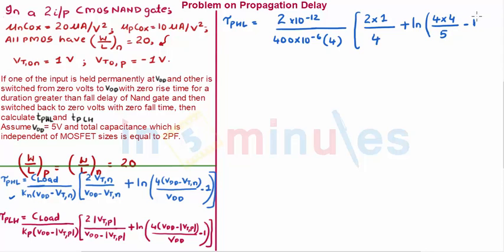V_DD minus V_TN is again, as I said, it's 4, so 4 × 4 upon V_DD which is nothing but 5 minus 1. So this is as simple as this. Now what you need to do is just simplify this and solve this mathematically. The value which you will get here of the propagation delay is nothing but 1.61 nanoseconds.